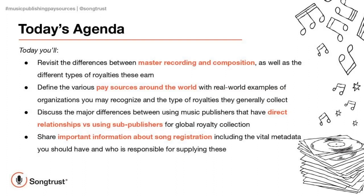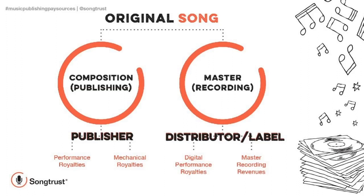Just a quick reminder that for each song you write and record, there are going to be two separate copyrights that exist within that one song. That will be the composition, which is the underlying melody, lyrics and music. And then the sound recording, also known as the master recording, which refers to the recorded version of the composition. Each of these copyrights has their own sets of rights, meaning those who own them get to decide who can use them and how. In addition, each half earns different royalties when used and are tracked by different organizations.